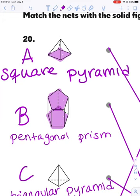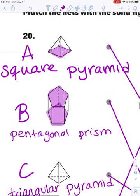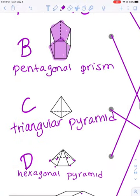For B, it's a prism because it has two bases. The reason it starts with pentagonal prism is because the bases are pentagons. The rest of the sides are rectangles, and that's what makes it a prism.